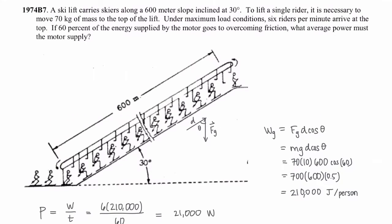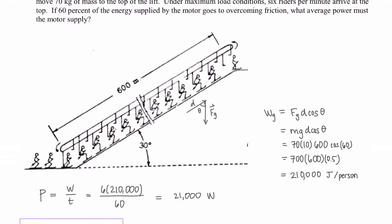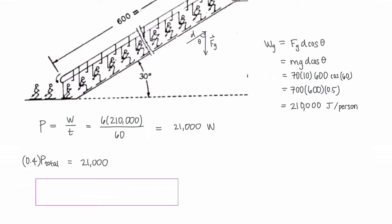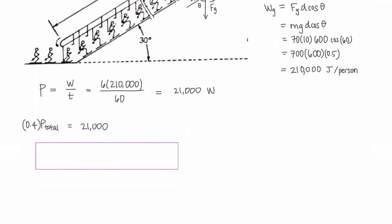However, the ride needs 60% of this power to go into overcoming friction, which means the power we just found is only 40% of the total power required. So if we divide both sides by 0.4, we can solve for the total power required, which is going to be 52,500 joules.